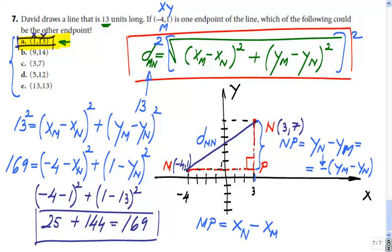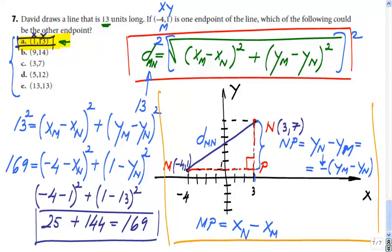This is just one way to solve the problem. I did a quick review to show you how the distance formula came about and how it connects to the Pythagorean theorem. Thank you.